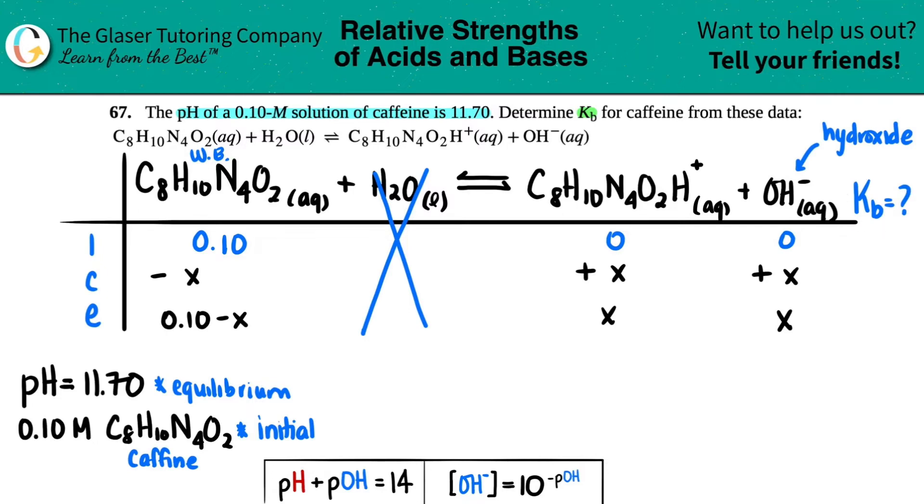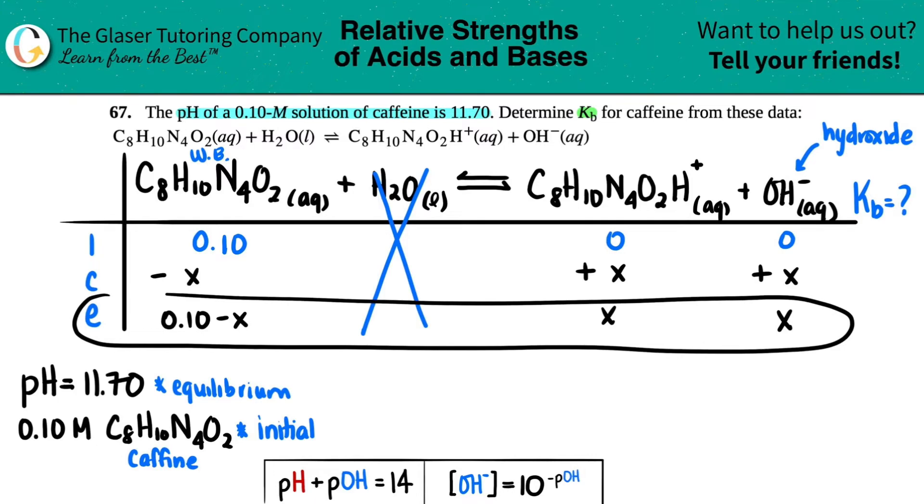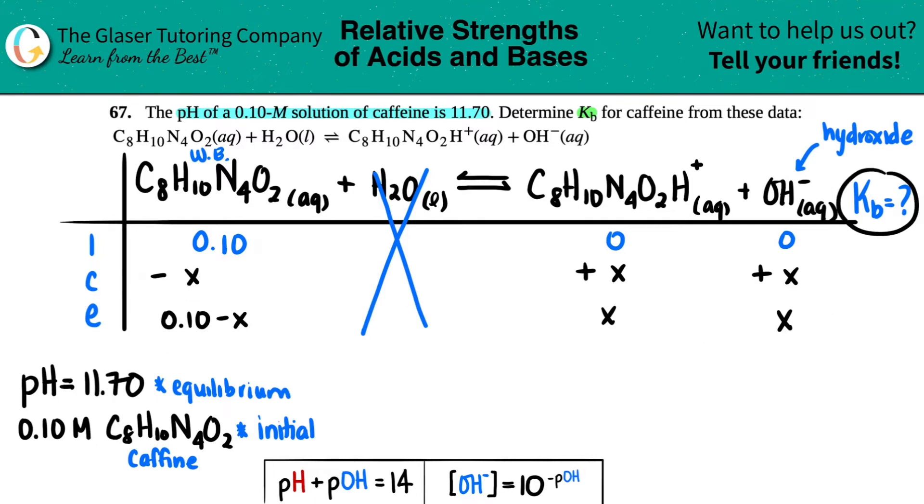Now, if we want to solve for the KB, that means that we actually have to have numbers here. I can't have any variables because the variable is finding KB. This is where the pH comes into play. Maybe we can go from a pH to one of these ions. This goes by our knowledge of our pH equations.